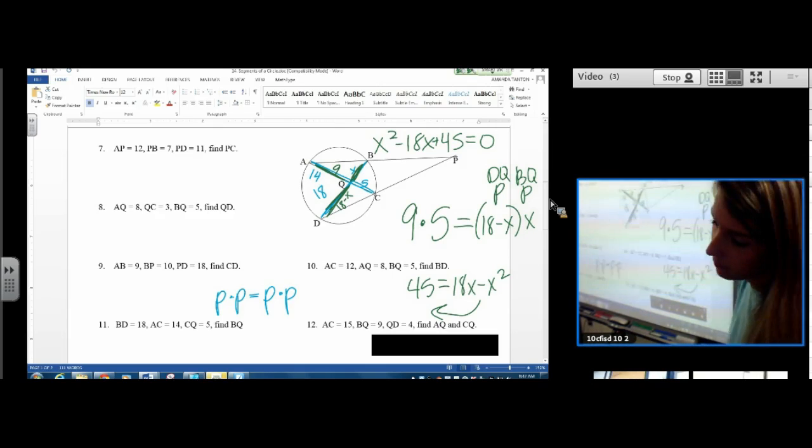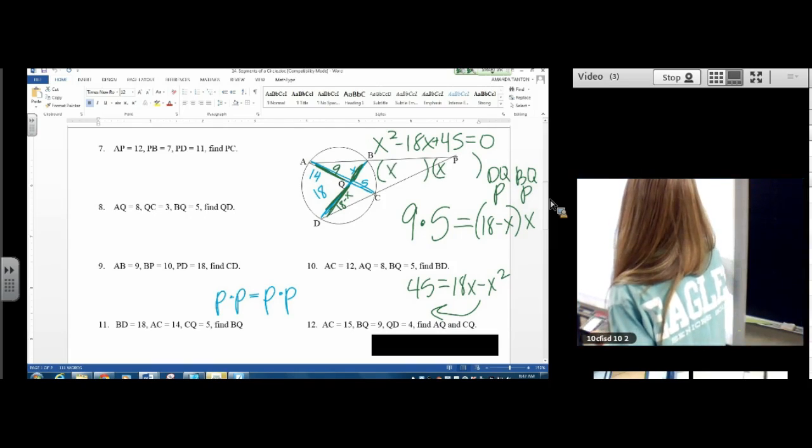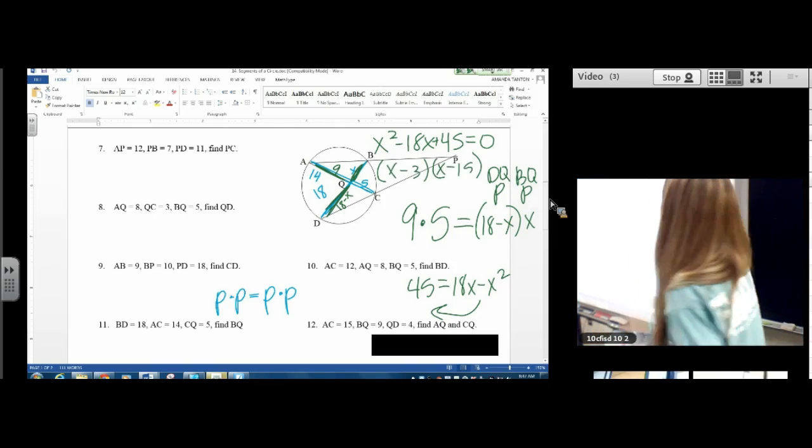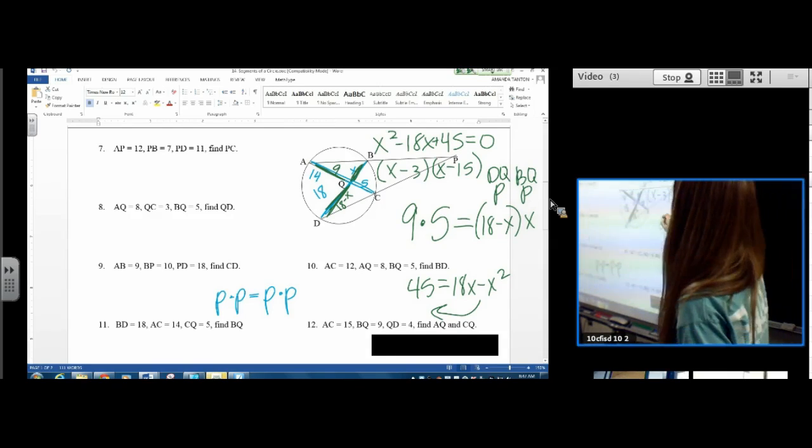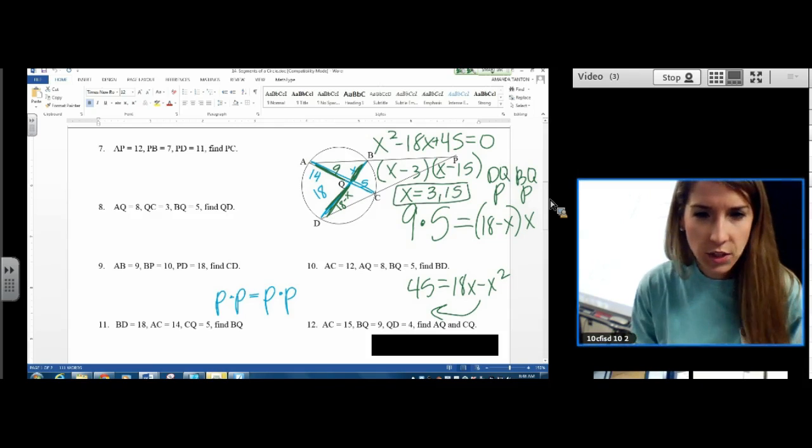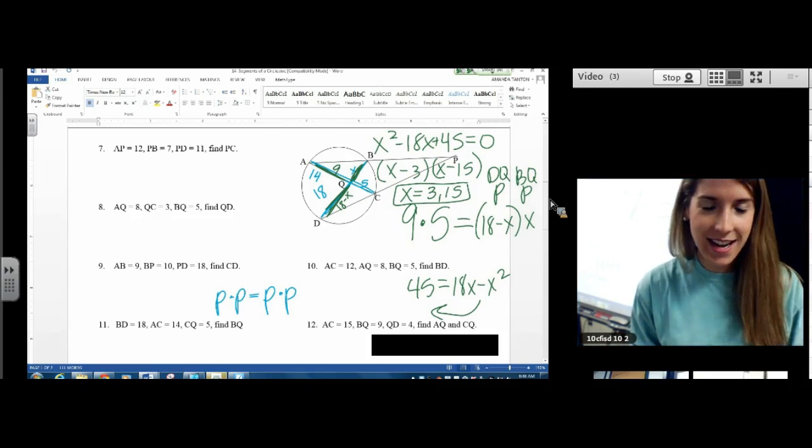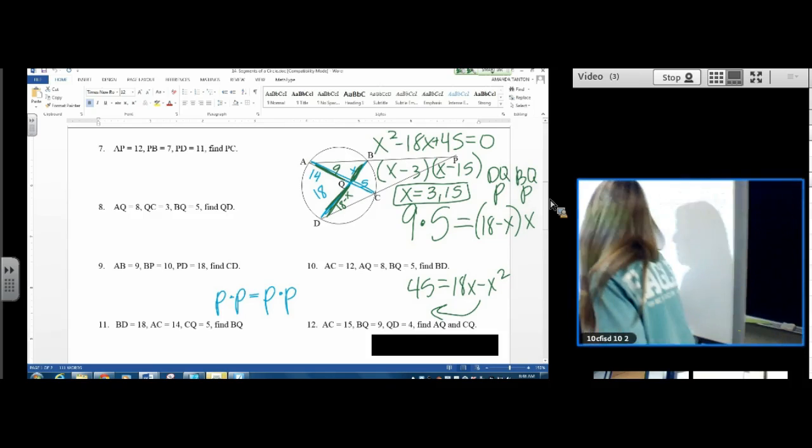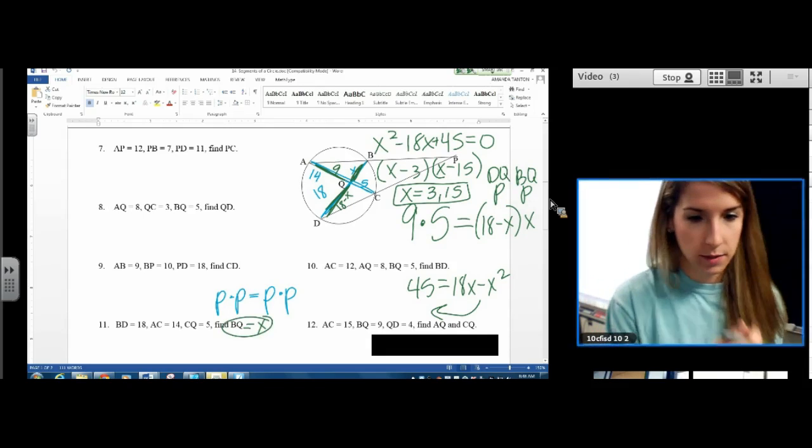Then we factor the problem and we get two answers. Minus 3 minus 15. So our answers are 3 and 15. Those are the answers for x. Oh, I named BQ x. So those are the answers. Since I named what we are looking for x, that's why that one has two answers. Okay.